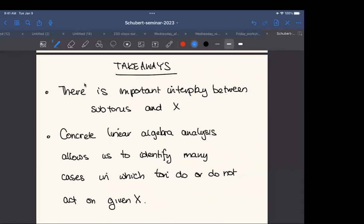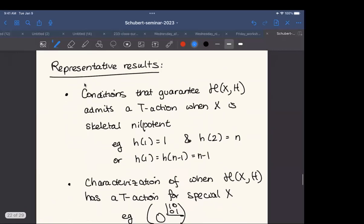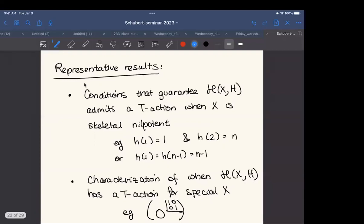So essentially, this is the kind of analysis that we do. What are the takeaways? There's an important interplay between what subtorus you pick and X. And I guess I could also add to that it also depends on incorporating what sort of conditions H imposes adds to that interplay. Furthermore, concrete linear algebra analysis will allow us to identify many cases in which tori do or do not act on a given X. So rather than specifically tell you theorems, I'm going to give you the sort of spirit of the results that we have.